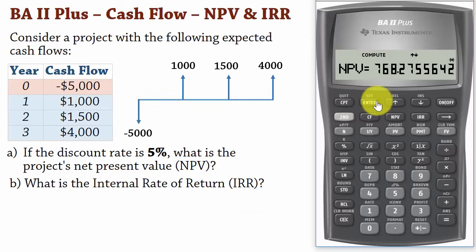To find the internal rate of return, that is the discount rate that makes NPV equal 0, simply press the IRR button. And then press compute. So the internal rate of return is 11.4%.